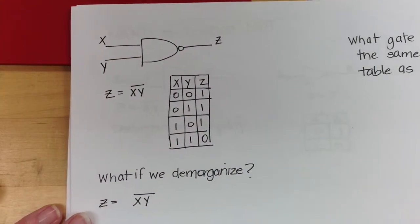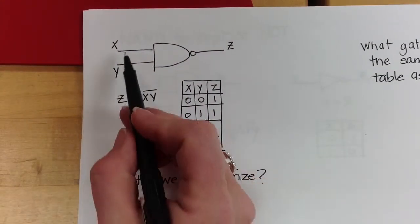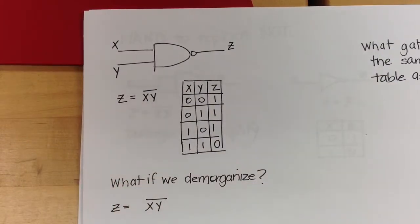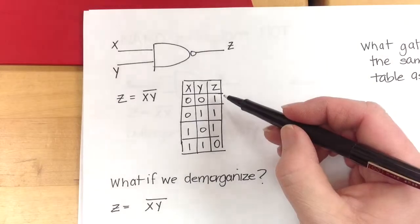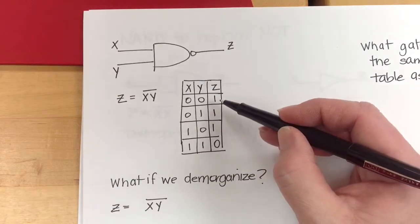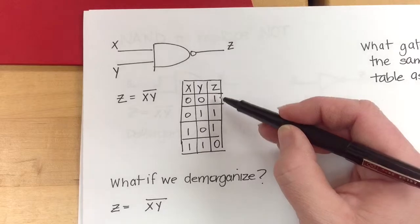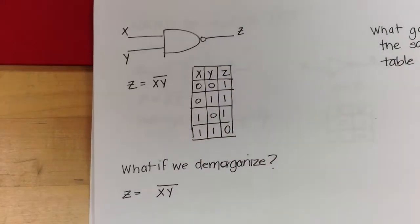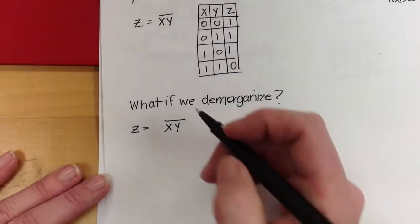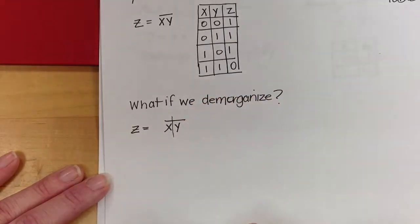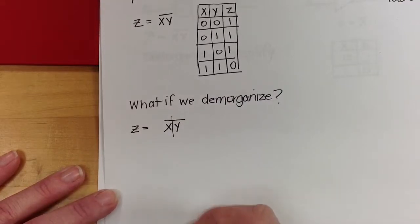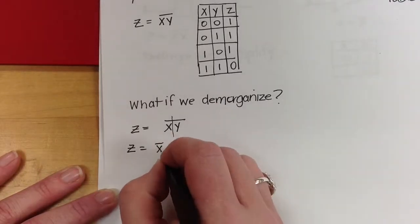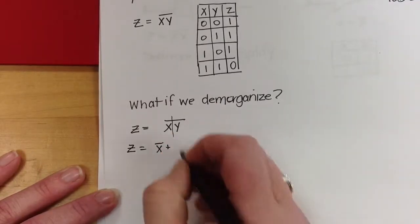Here we have a NAND gate with X and Y as inputs, so the output is X AND Y with a bar over the top. Here's the truth table for it — there is a 1 for the output everywhere except at 1, 1. Let's imagine what if we DeMorganize that statement. We would break the line and change the sign, so Z equals NOT X OR NOT Y.